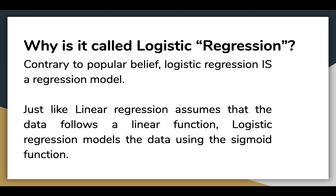The model builds a regression model to predict the probability that a given data entry belongs to the category numbered as 1. Just like linear regression assumes that the data follows a linear function, logistic regression models the data using the sigmoid function.